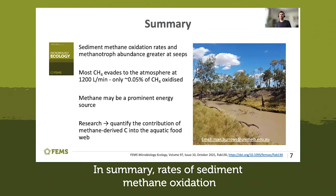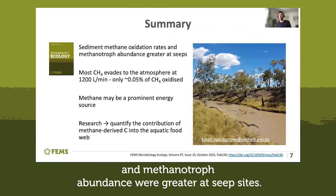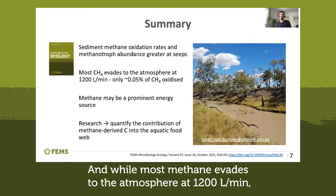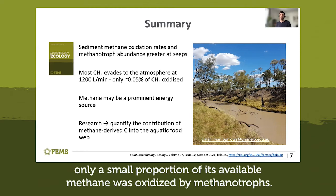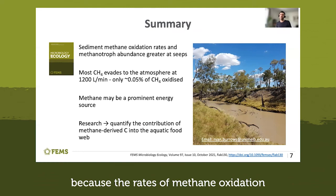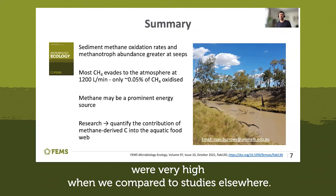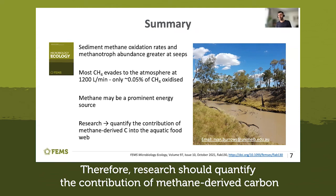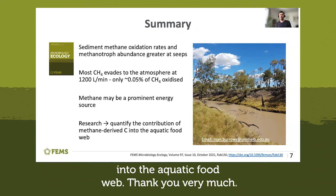In summary, rates of sediment methane oxidation and methanotroph abundance were greater at seep sites. While most methane evades to the atmosphere at 1200 litres per minute, only a small proportion of this available methane was oxidised by methanotrophs. But methane may still be a prominent energy source in this aquatic ecosystem because the rates of methane oxidation were very high when compared to studies elsewhere. Therefore, research should quantify the contribution of methane-derived carbon into the aquatic food web.